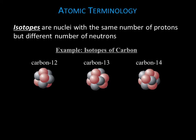Versions of an element with different numbers of neutrons are called isotopes of that element. For example, carbon always has six protons, but it can have different numbers of neutrons.